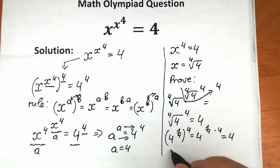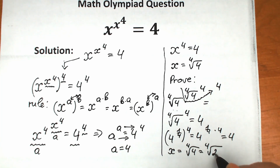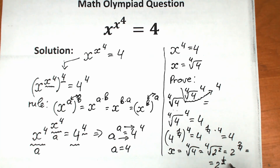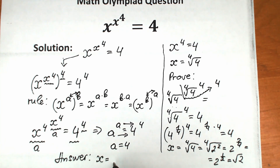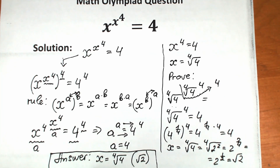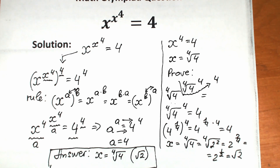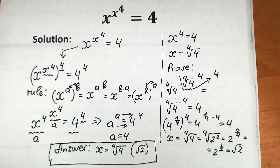We can also rewrite the 4th root of 4 as the 4th root of 2 squared, which equals 2 to the power 2/4, equal to 2 to the power 1/2, or the square root of 2. So our answer is x equals the square root of 2, or equivalently the 4th root of 4 — both interpretations are valid. Thank you for your time. I hope you understood this explanation and learned something new. If you need help, I have more than 300 videos on my channel. Thank you for your support and see you in the next videos.